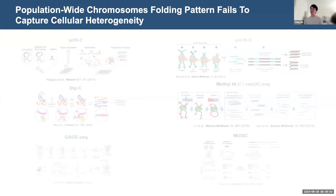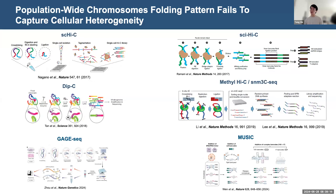We now have a lot of single-cell Hi-C methods developed in the past few years. This includes low-throughput methods like single-cell Hi-C or Dip-C, and also high-throughput combinatorial indexing methods like sci-Hi-C. Despite their applicability, they involve tedious experimental procedures or requirements for expensive equipment, so they cannot be easily adapted by different labs. In response, we managed to adapt the Hi-C protocol with the widely available 10X single-cell ATAC platform.